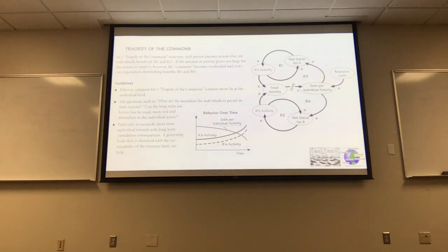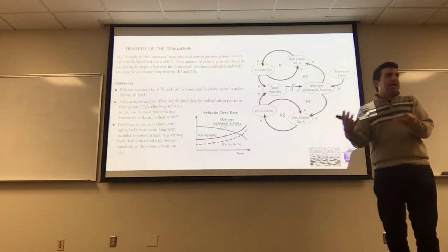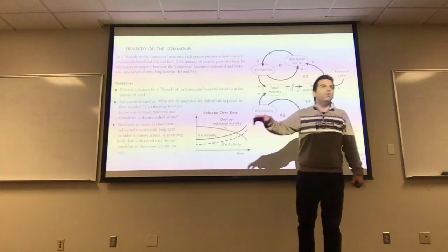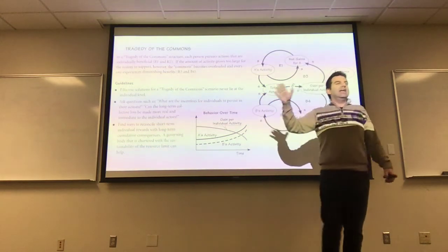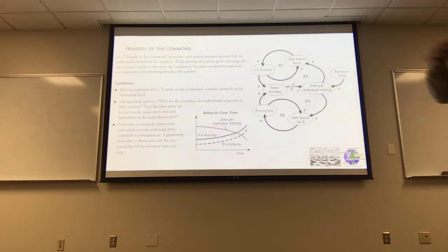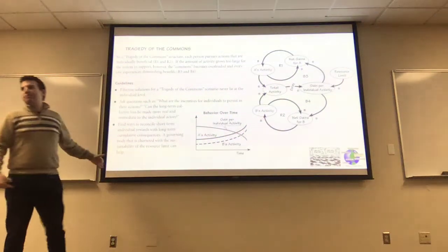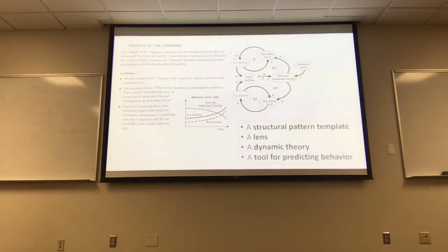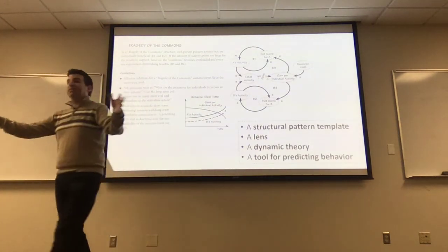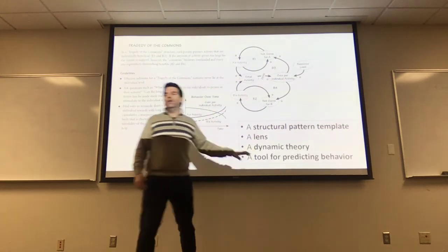Commonly a governing body is chartered with the sustainability of the resource limit — maybe only allowing 100 people on the road at a time. Lynn Ostrom, a very famous social scientist who had a role here at ASU, showed there are decentralized ways for local communities to solve these problems without needing a militant governing force. But these are general guidelines: when you notice a tragedy of the commons, your first thought should be along these lines. I've talked about behavior over time, made predictions, explained what's going on, and gave prescriptions.